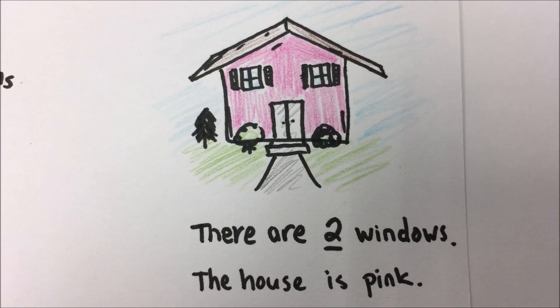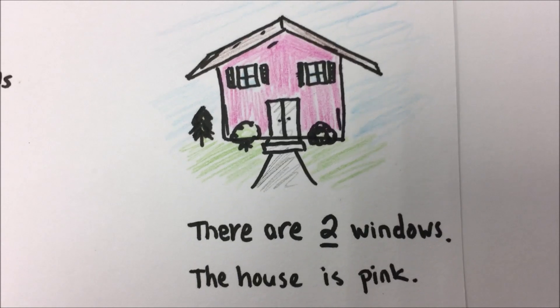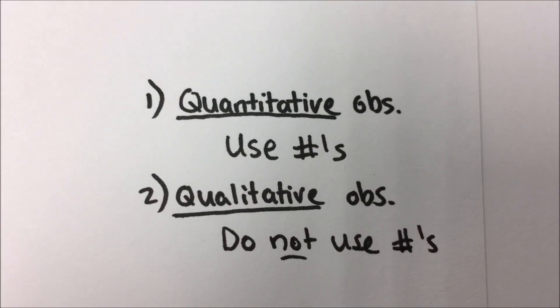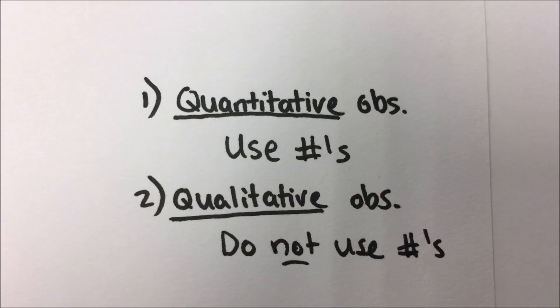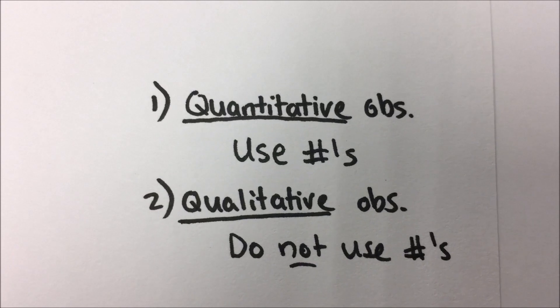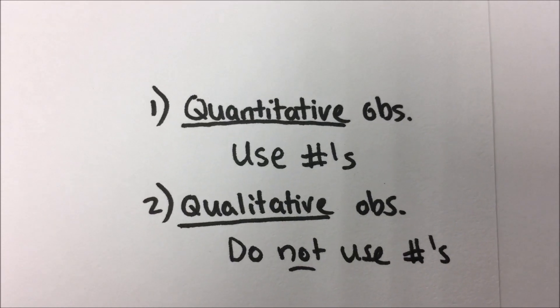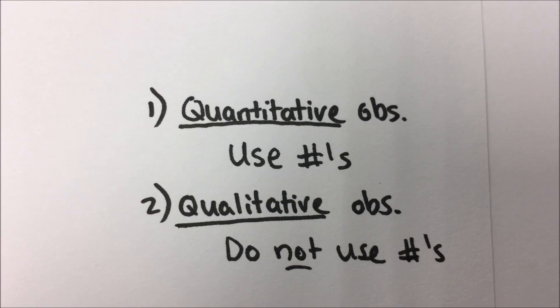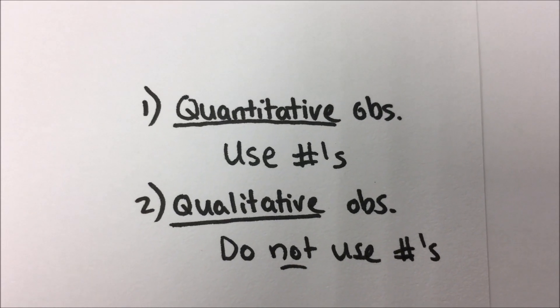All of these observations fit underneath two categories: quantitative and qualitative observations. Those that use numbers are quantitative; those that do not use numbers are qualitative.